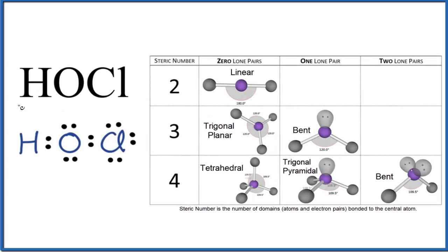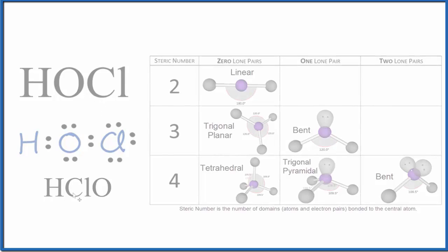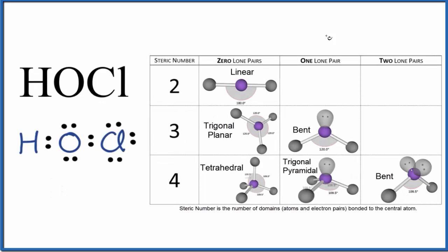Let's look at the molecular geometry for HOCl. Sometimes you'll see this written as HClO. Either way, it's the same thing. Let's go with HOCl. This is hypochlorous acid.